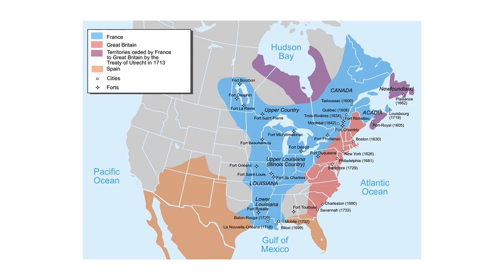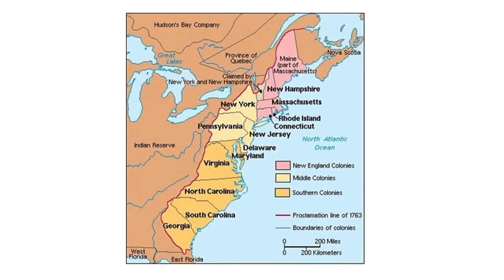The Dutch were also present in modern-day New York, known as New Amsterdam. We'll mainly focus on the 13 colonies. The first permanent settlement was Jamestown, Virginia, in 1607. When they got the charter from the king, Virginia technically extended from South Carolina up into Canada — the borders were more defined later. The king gave a charter, basically the authority, to a company called the Virginia Company to settle in America.